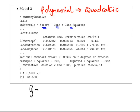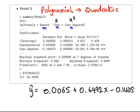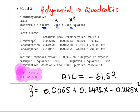Concentration plus concentration squared. So let's just write this down here. Y hat equals 0.0065, we'll just go to four decimal places, plus 0.6492x minus 0.1405x squared. So that's the regression equation here. We notice also, again, we're going to again look at the AIC value. In this case, the AIC value is minus 61.53.